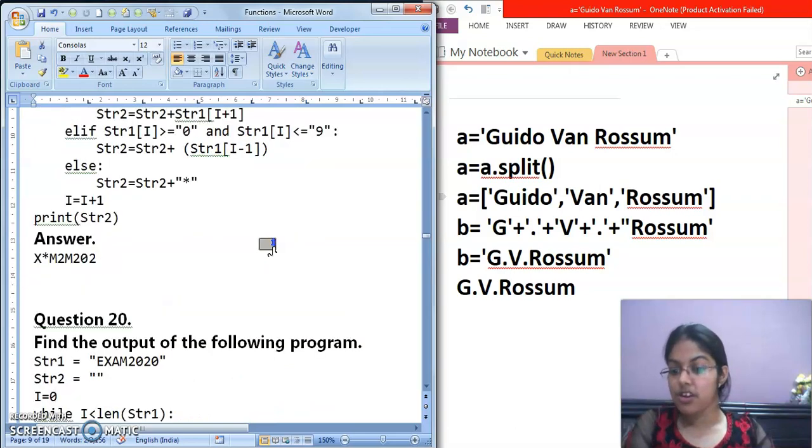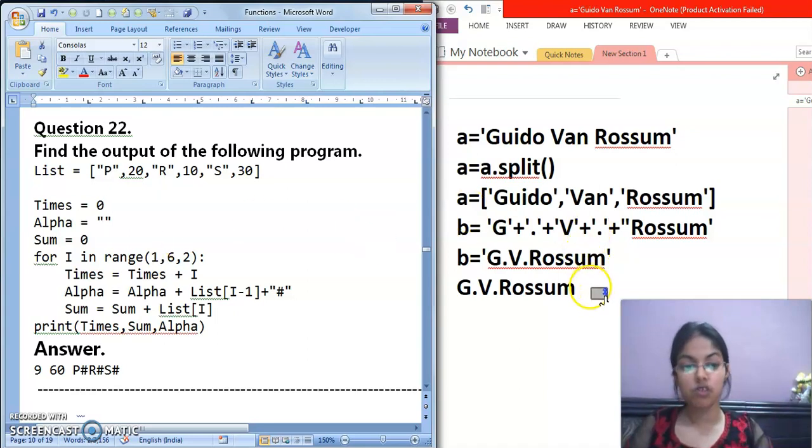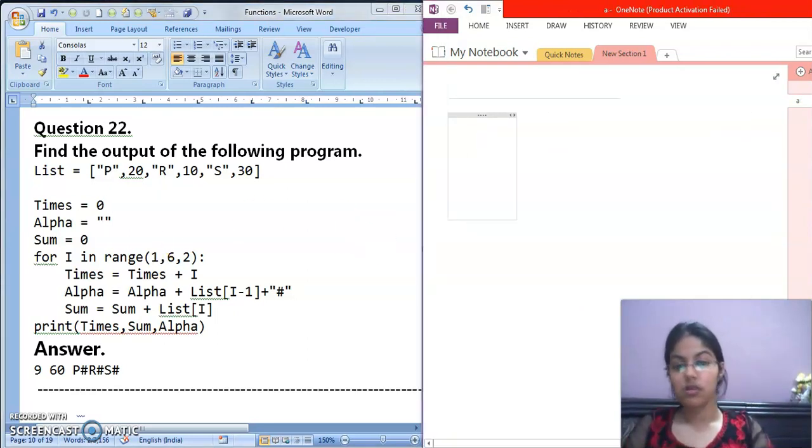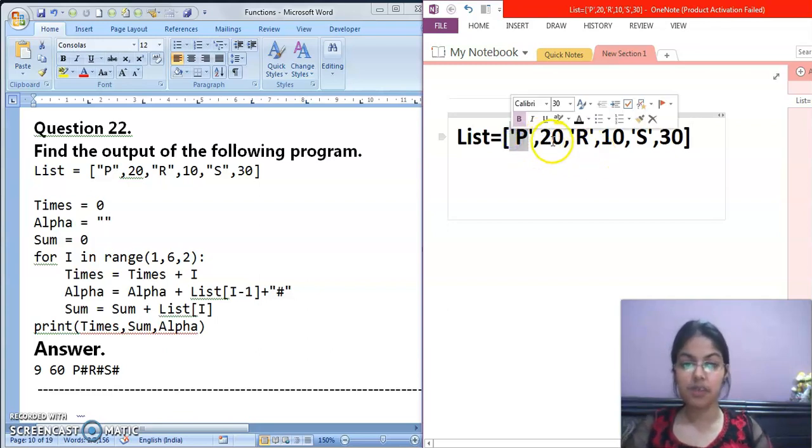This question we have already discussed in my first video. Now move to the next question. I am trying to find the question which we have not attempted. This question we can do now. Let's start. List is given, in that values are: P is your string, then 20, and then R, and then 10, then S, and then 30. Let me check this. First is your string P, 20, R, 10, S and 30. One string value, then one integer value, then one string value, one integer value. In sequence the elements are given.